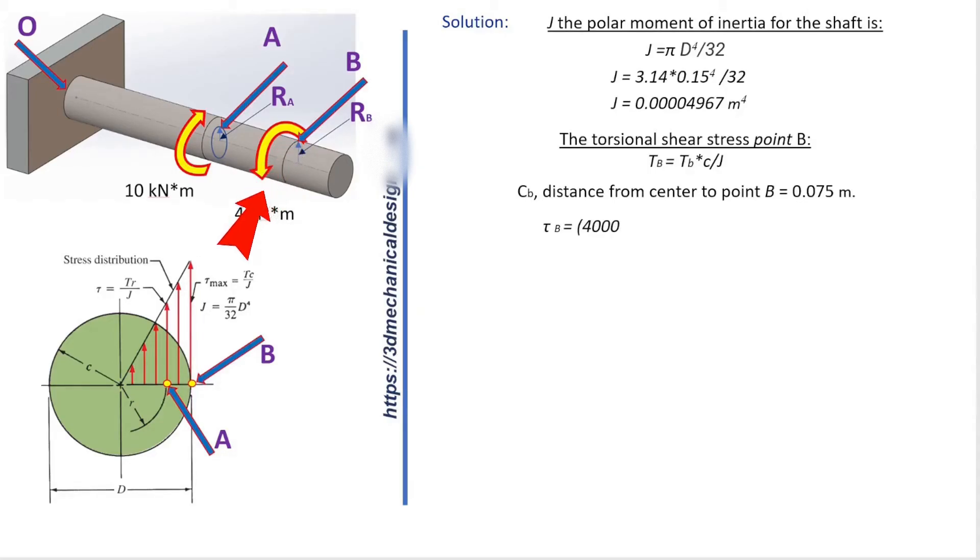Tau B equals 4,000 times 0.075 divided by 0.00004967. Tau B equals 6.039 megapascals.